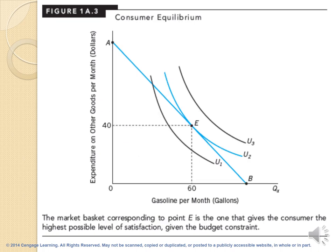In the graph, we put all the indifference curves together — the indifference map — with the budget line, giving us consumer equilibrium. Consumer equilibrium is the intersection point between the budget line and the highest indifference curve. We choose the highest indifference curve because, as a consumer, we want the highest utility or highest level of satisfaction. The market basket corresponding to point E gives the consumer the highest possible level of utility according to their budget line, so point E is the optimal point or the point of consumer equilibrium.